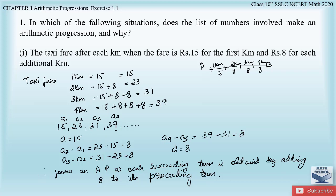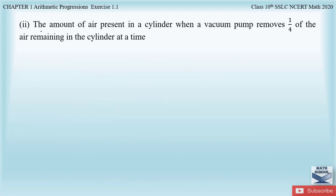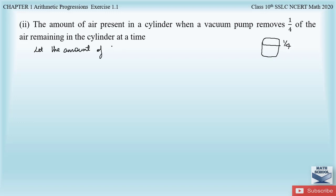Moving to the second part of question 1, which says: the amount of air present in a cylinder when a vacuum pump removes one-fourth of the air remaining in the cylinder at a time. It has a cylinder and a vacuum pump removes one-fourth of the air inside the cylinder each time it pumps. We don't know the initial amount of air, so let us assume the initial amount of air present in the cylinder to be V.